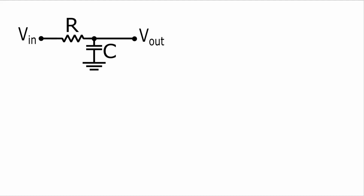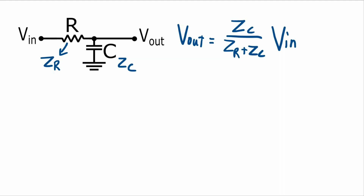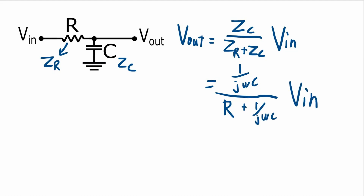The most basic circuit with a pole is a low-pass filter like this. Just to remind you of the relationship between output voltage and input voltage for this simple circuit, let's go through that derivation. That resistance has an impedance of Zr, and this capacitance has an impedance of Zc. Let's do this in the frequency domain. This is just a basic voltage divider circuit. The impedance of the capacitor is 1 over jωC, and the impedance of the resistor is simply R. We can combine jω to give us S, and then simplify with a little bit of algebra.